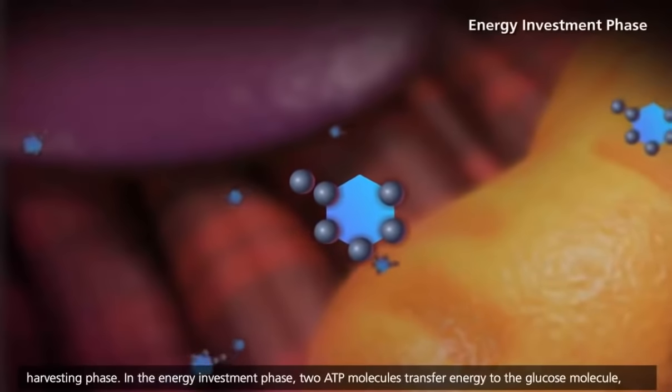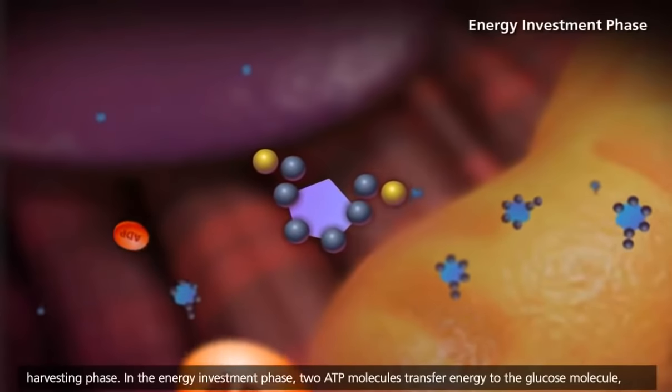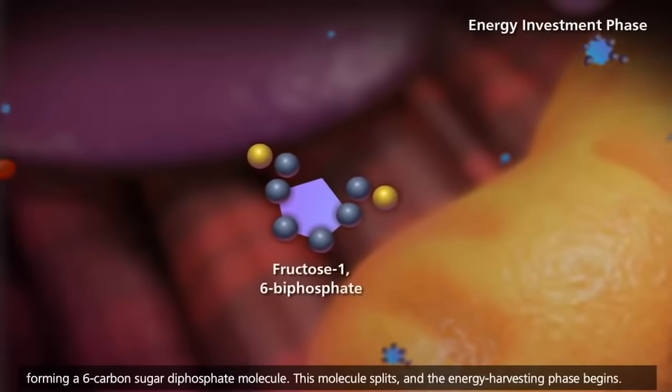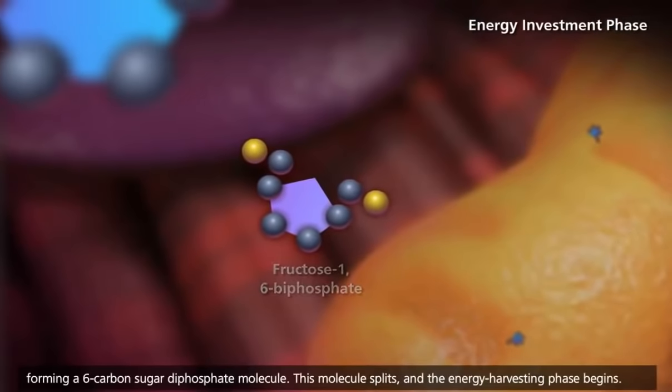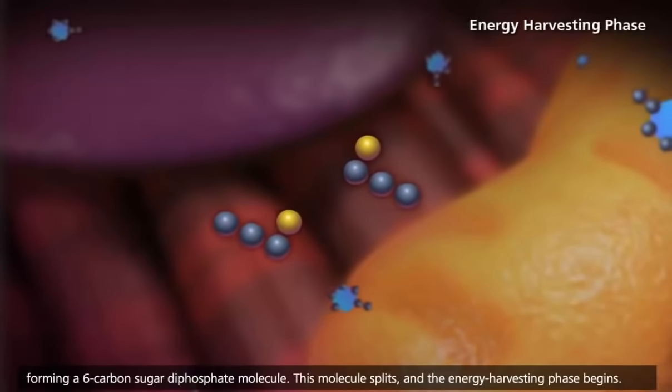In the energy investment phase, two ATP molecules transfer energy to the glucose molecule, forming a six-carbon sugar diphosphate molecule. This molecule splits, and the energy harvesting phase begins.